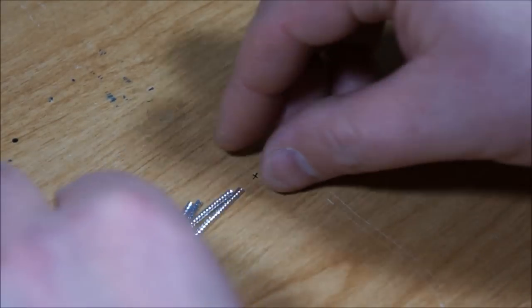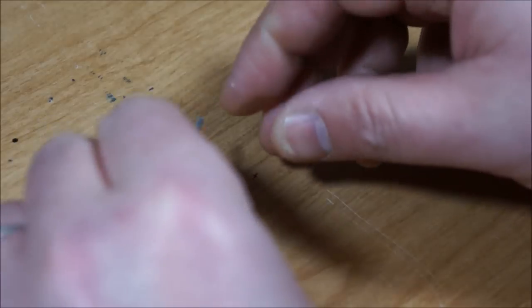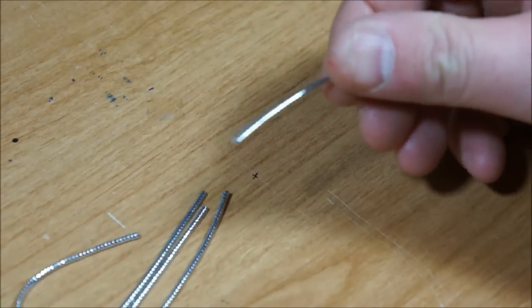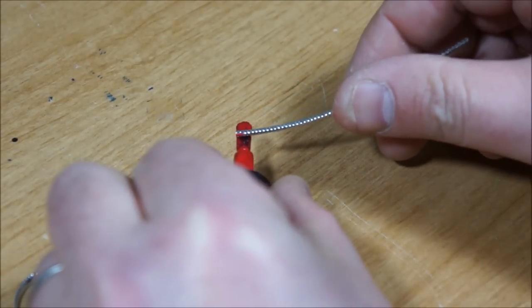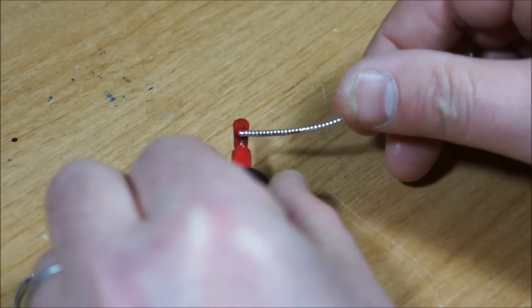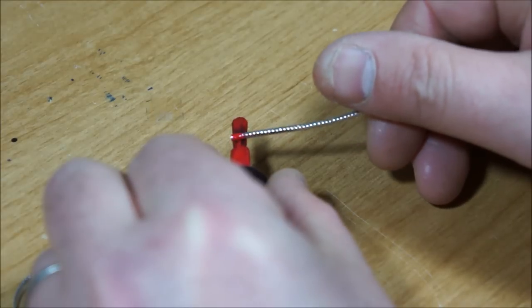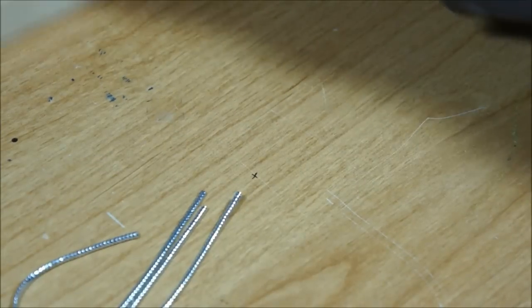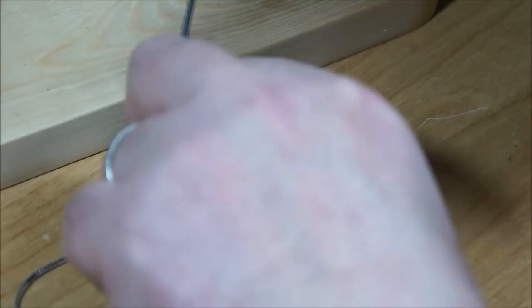So then to stop the ends fraying when I'm putting onto the hook, what I'm going to do is just roll them in a bit of nail varnish, just one end, just to hold it together. And then just rest them on something.